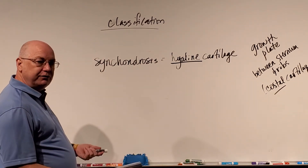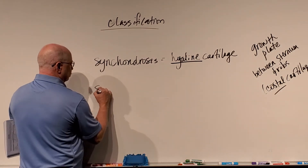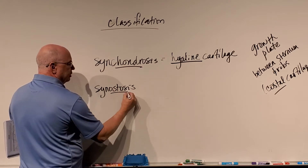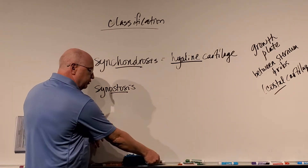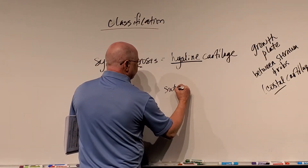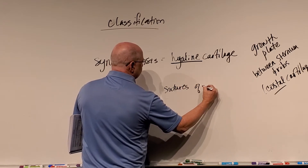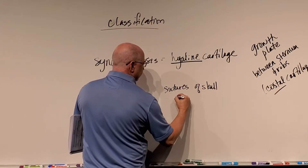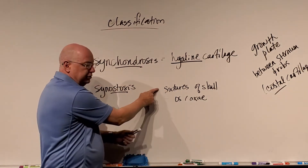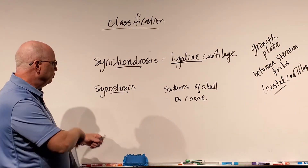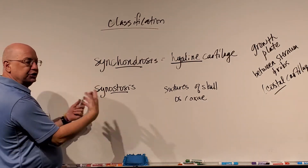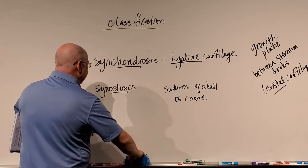The next structural type is a bony fusion called a synostosis. 'Chondrosis' is cartilage, 'ostosis' is a bony fusion. This is where bones are completely fused together. Good examples are the sutures of the skull and the os coxae — especially in adults, where sutures have completely grown together. That's called a synostosis, a bony fusion. All of these — gomphosis, synchondrosis, synostosis — are types of synarthrosis, meaning no movement.